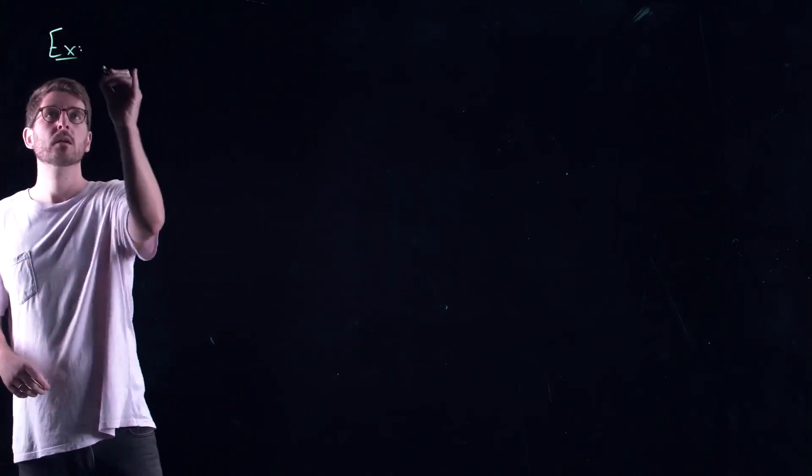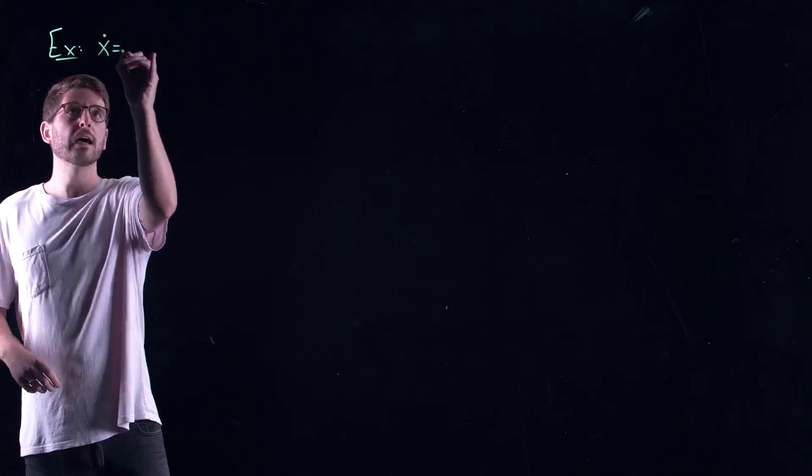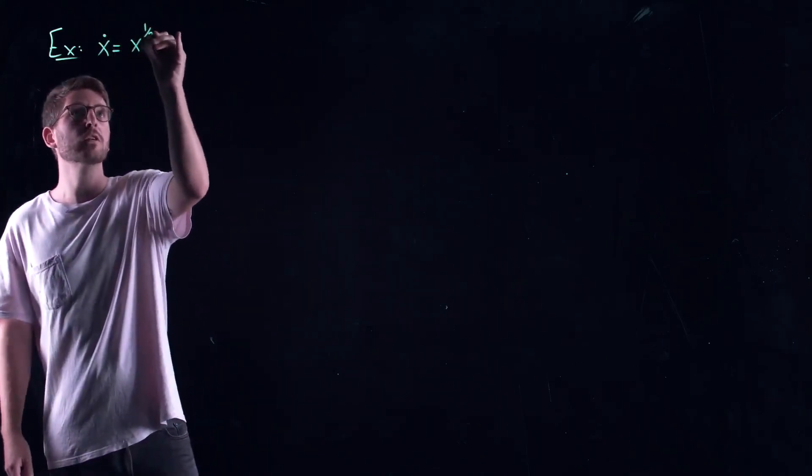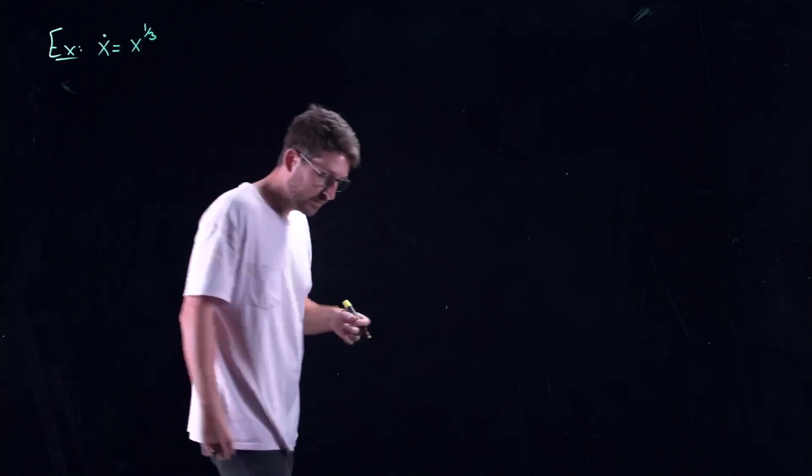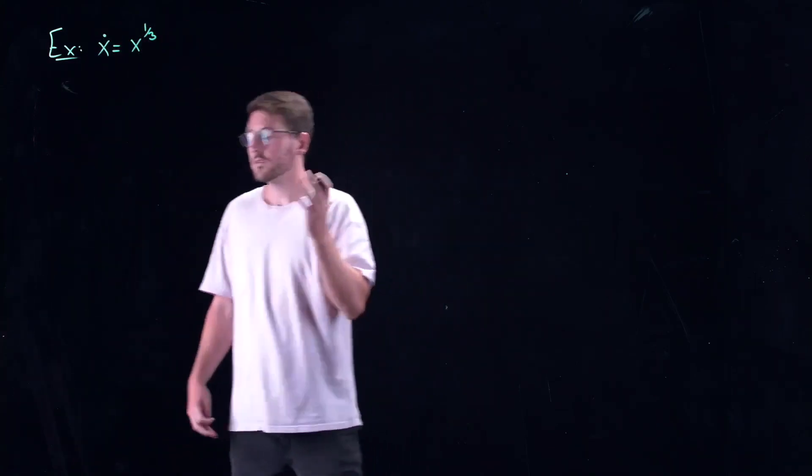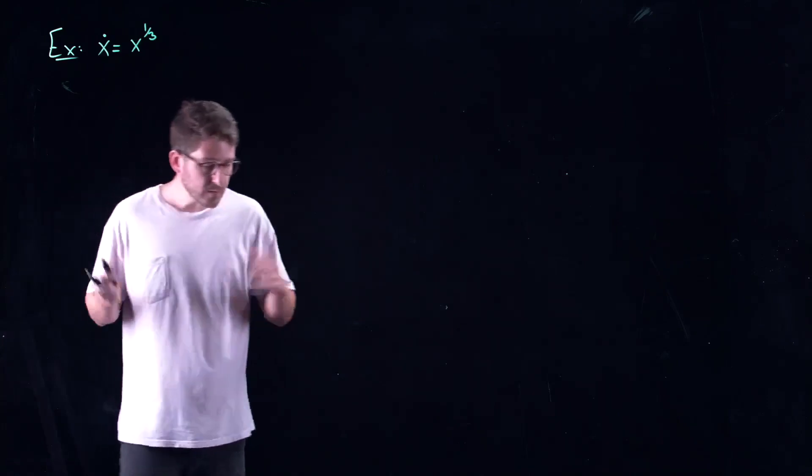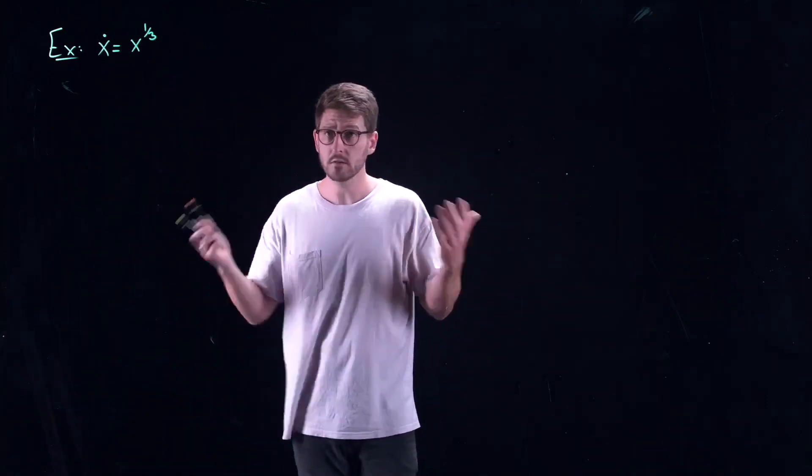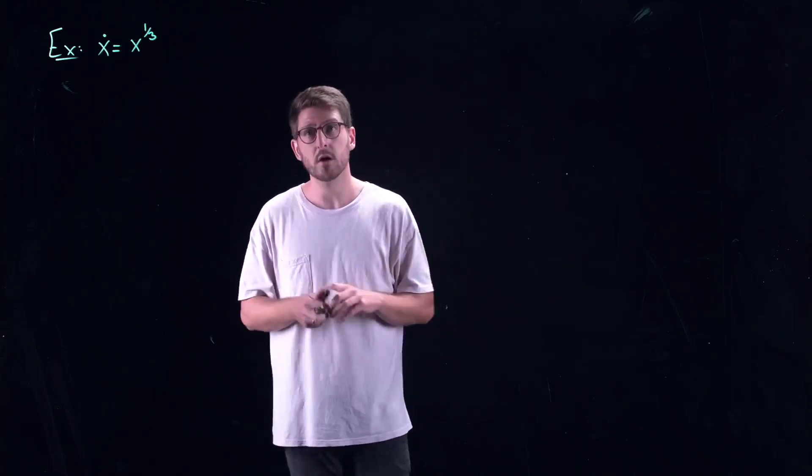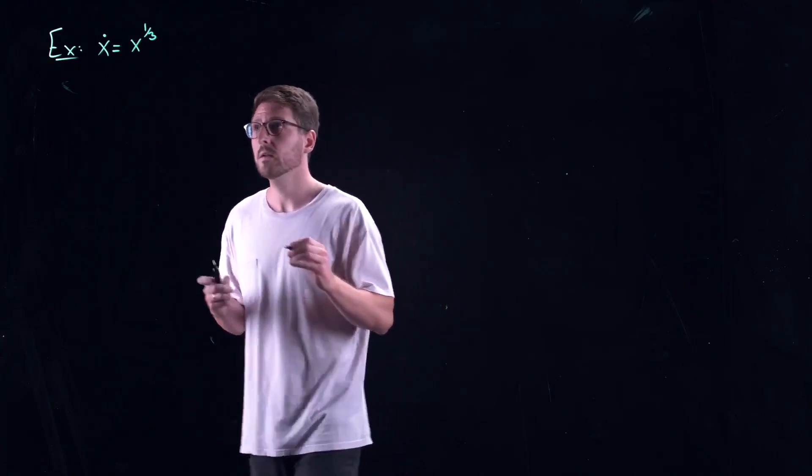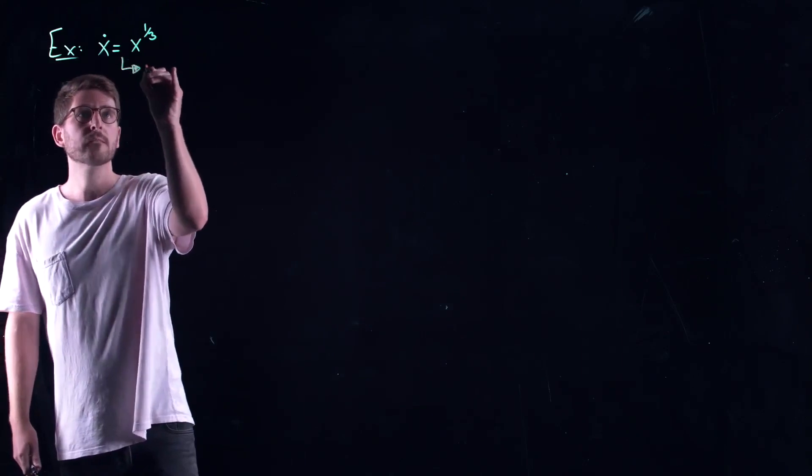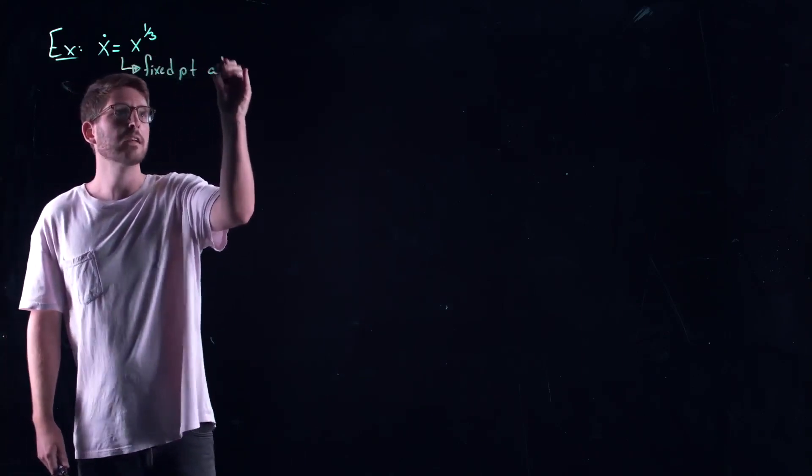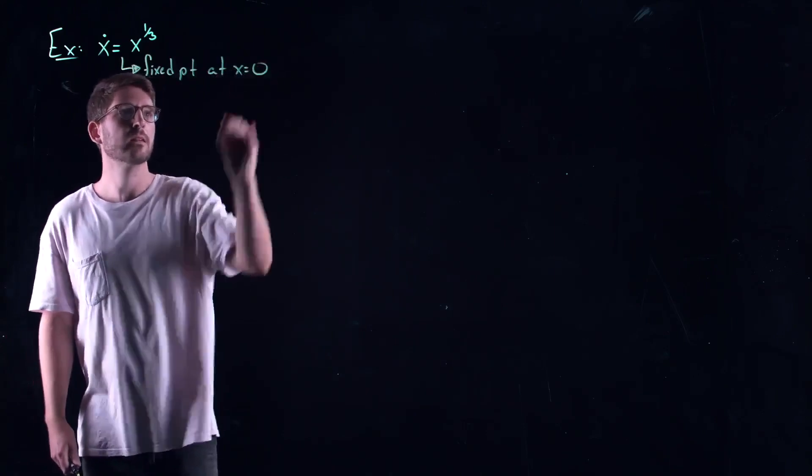Here's my example. Let's look at x dot is equal to the cubed root of x. Now, let's think about this for a second. The phase space here could be the entire real line. There's no restrictions on taking a cubed root, right? So it's not like a square root. I'm not going to wind up in the complex domain. Everything's all good. I have a fixed point at x equal to zero.